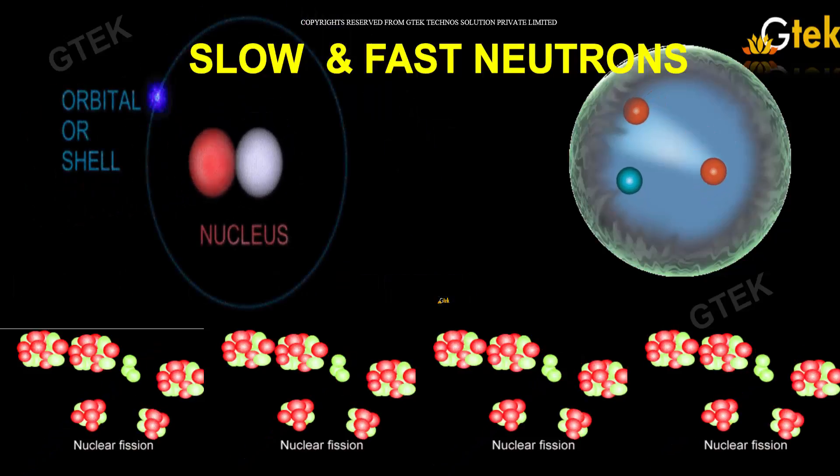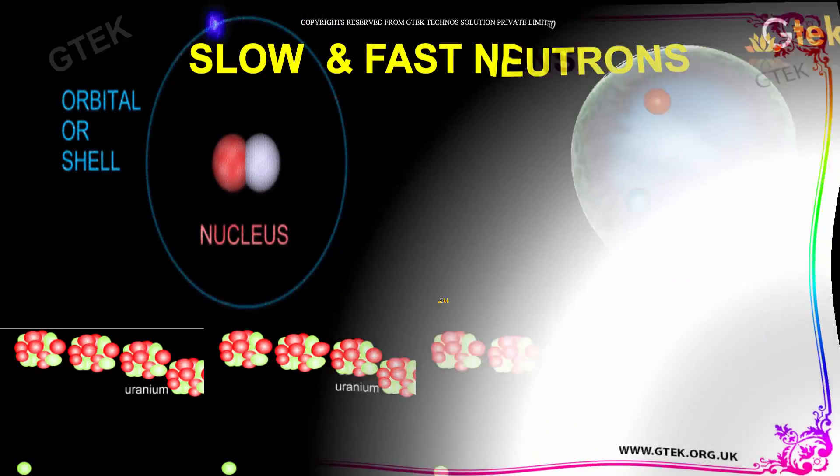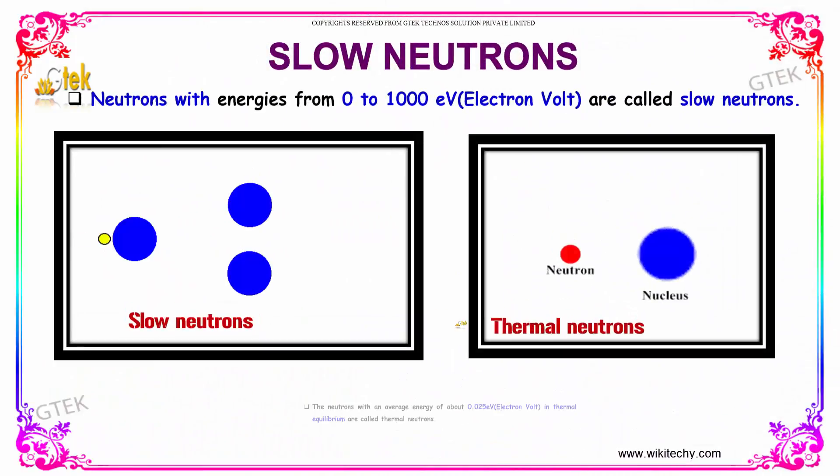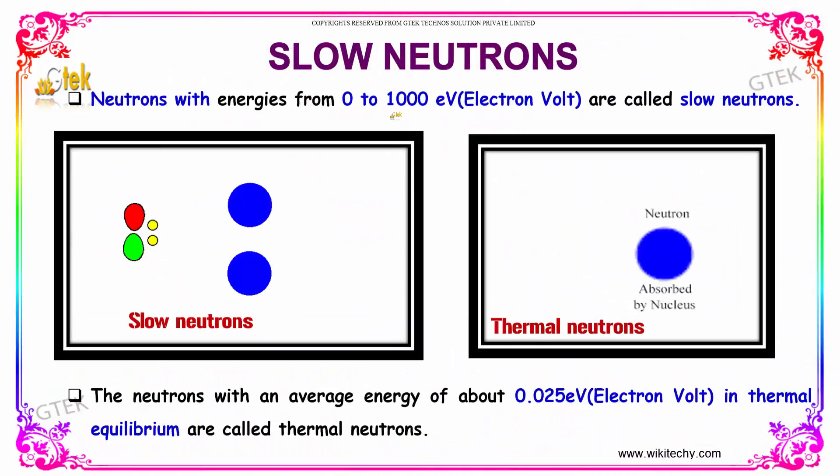What are slow and fast neutrons? Neutrons with energy from 0 to 1000 eV are called slow neutrons.